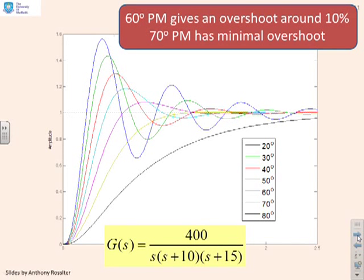This example is now third order, and we get a relatively similar message. With 70 degrees, I get this plot with very small overshoot and nice smooth behavior—70 degrees looks not bad. With 60 degrees, I get about 10% overshoot.